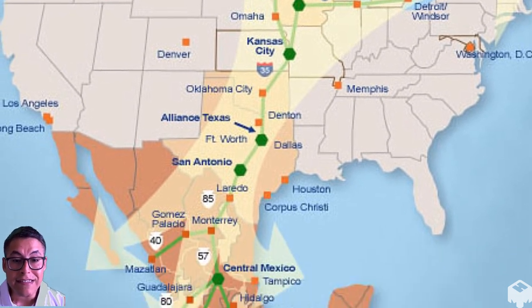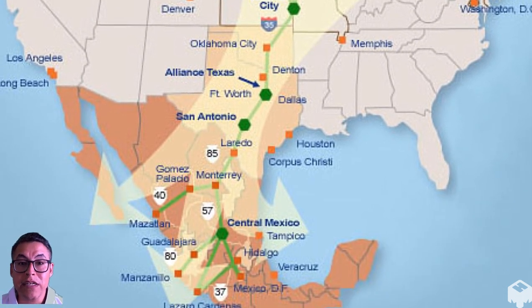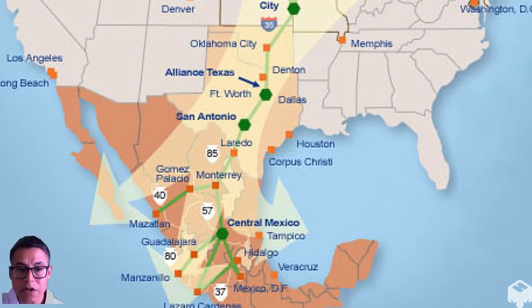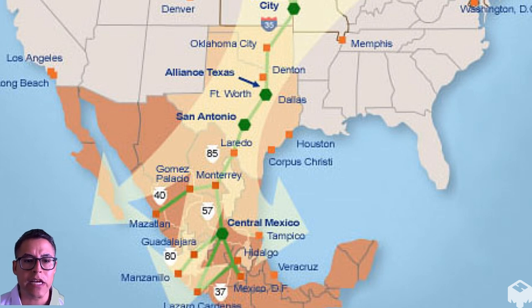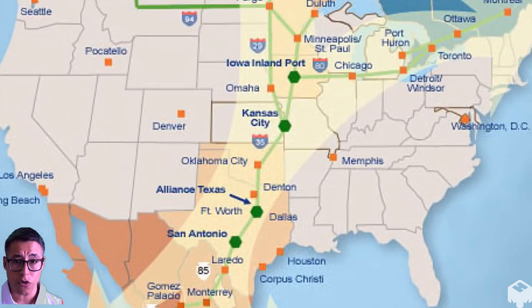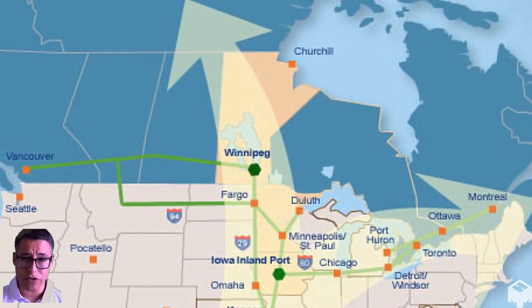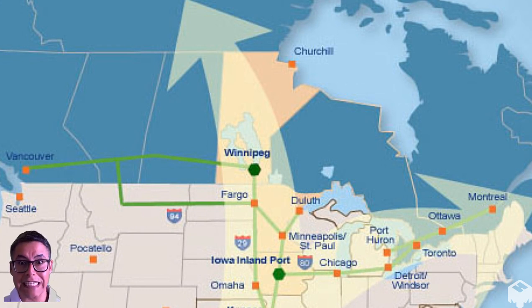Now, because these three countries are connected and interdependent with each other, we call this an economic region. So we literally call this the economic corridor of North America. And so as you can tell in Mexico, there are several places where these items can be assembled in factories called maquiladoras. All the way up to Canada and into the United States. These are all interconnected regions.